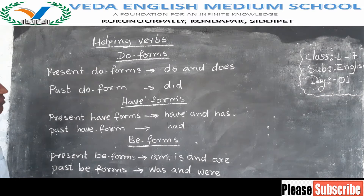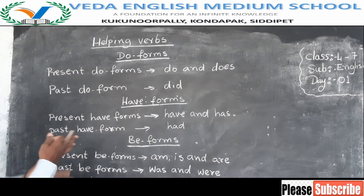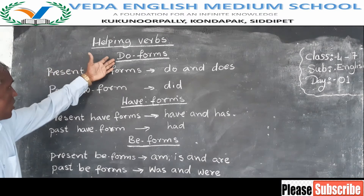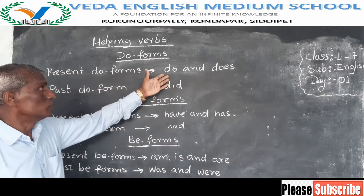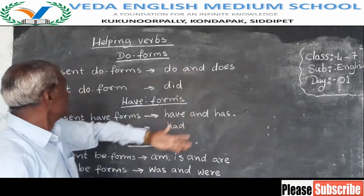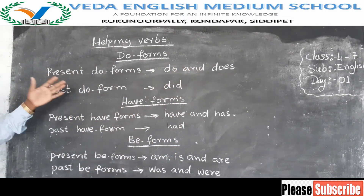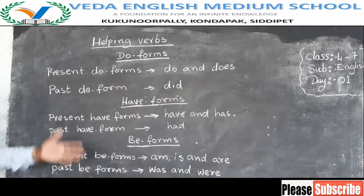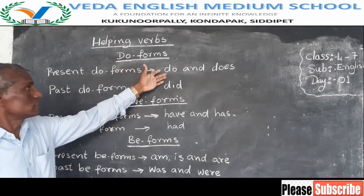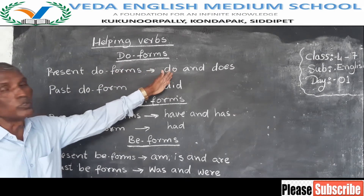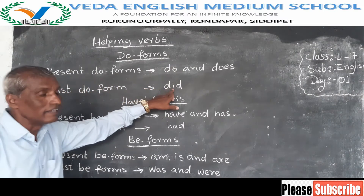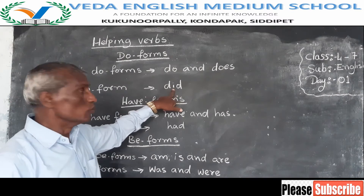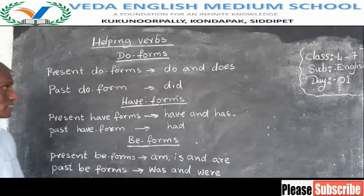For example, do forms. There are present do forms, which are do and does. To make simple present tense, we have to use do and does. The past do form is did, which we use in the simple past tense.